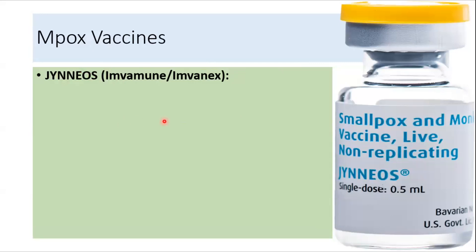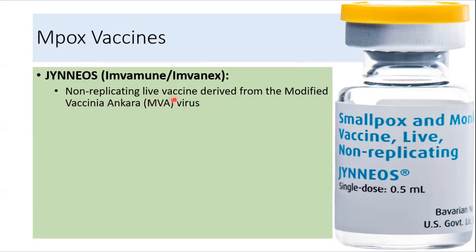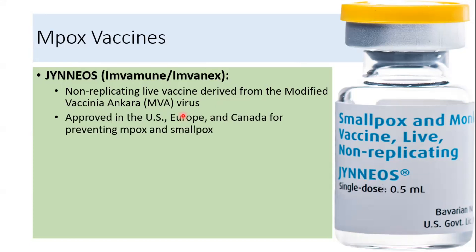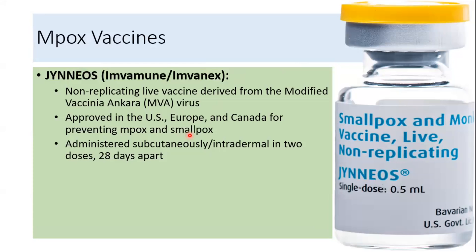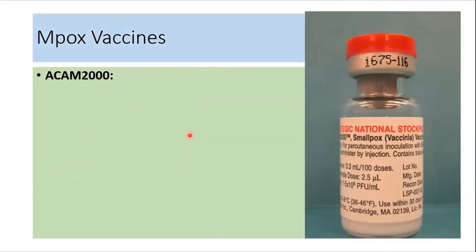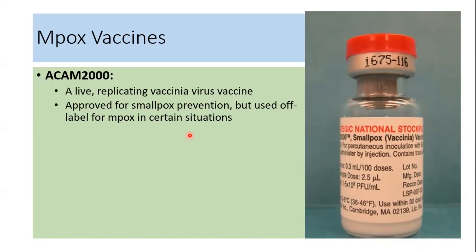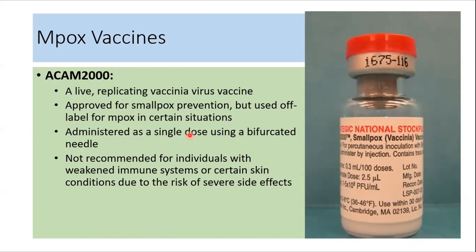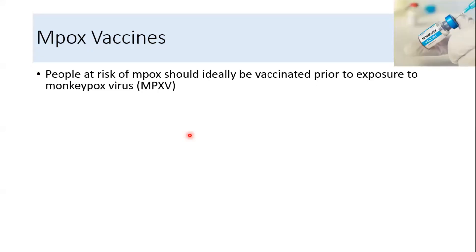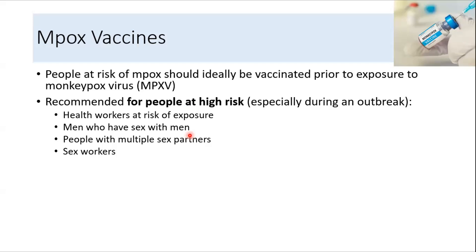There are two types of Mpox vaccines available. The first and most commonly used is Jynneos, a non-replicating live vaccine derived from modified vaccinia Ankara (MVA) virus, approved for both Mpox and smallpox. It is administered subcutaneously or intradermally in two doses 28 days apart, and is suitable for immunocompromised individuals. The second vaccine is ACAM2000, a live replicating vaccinia virus vaccine approved for smallpox prevention but used off-label for Mpox in certain situations. It is administered as a single dose using a bifurcated needle and is not recommended for patients with weak immune systems or certain skin conditions due to the risk of severe side effects. These vaccines are indicated for people at risk of Mpox, including healthcare workers at risk of exposure, men who have sex with men, people with multiple sex partners, and sex workers.